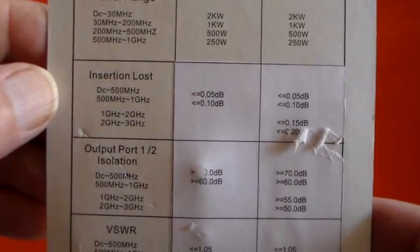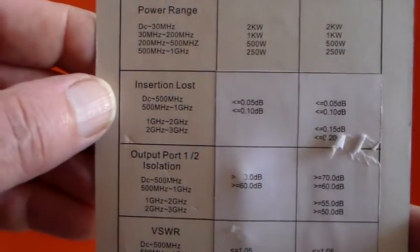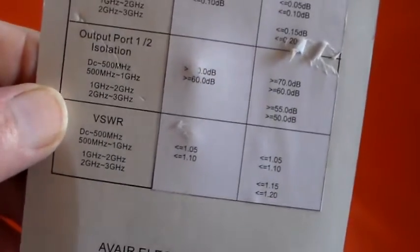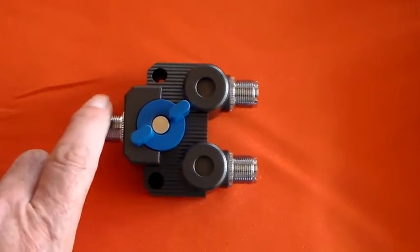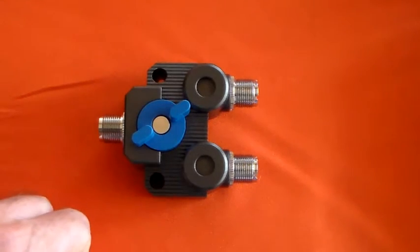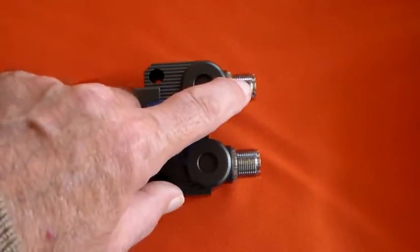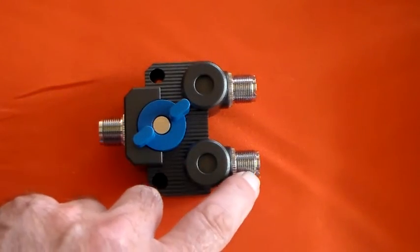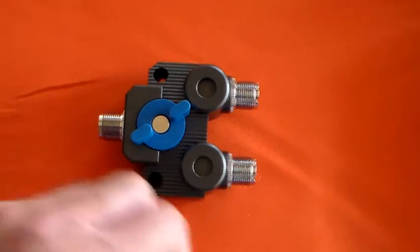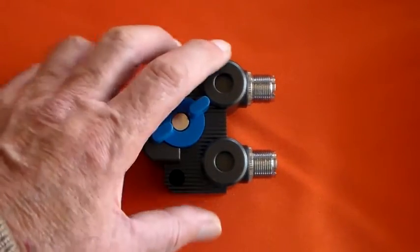Just quickly just getting back to the specifications, it says the insertion loss is better than 0.05 dB at DC to 500 megahertz, that's where I'm going to be interested in using it, and port isolation we've covered. So I was going to bring up the Rohde and Schwarz and I was going to test the insertion loss from common to both ports, and then I was going to test the isolation between the selected port and the non-selected port. Just to see how close to 70 dB it actually is. It would have to be considerably better than 70 dB to actually be able to put a radio on each one and use them for transmitting.